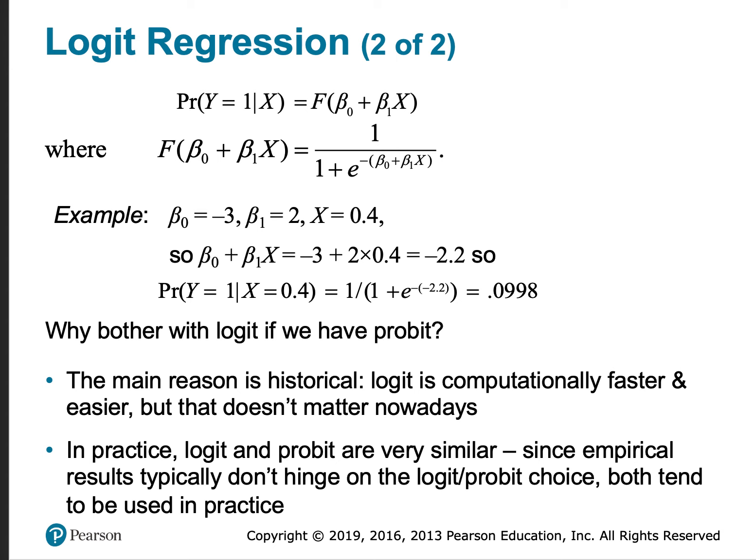Let's look at an example. Suppose that beta naught, or the coefficient on the constant regressor, is negative 3. Suppose that beta 1 is 2 and x is 0.4. So beta naught plus beta 1 times x is negative 3 plus 2 times 0.4, which gives you a value for z of negative 2.2.